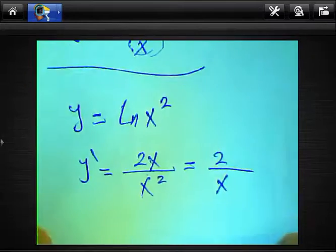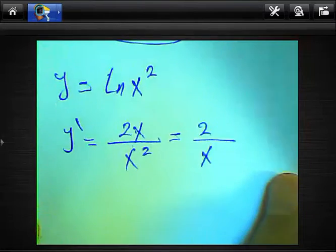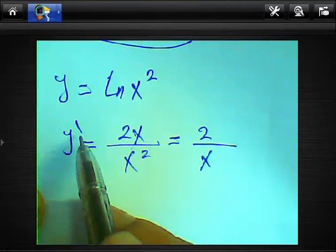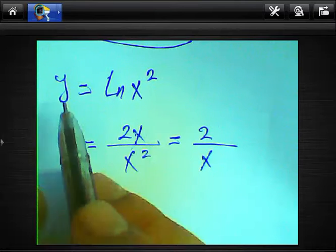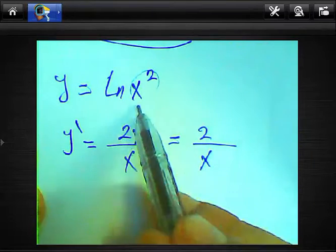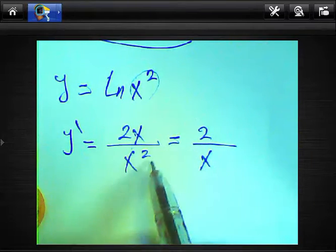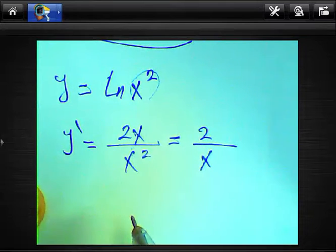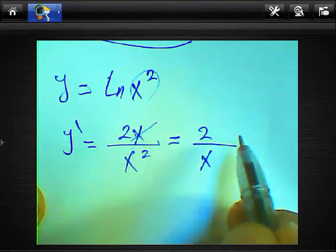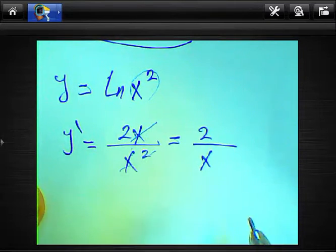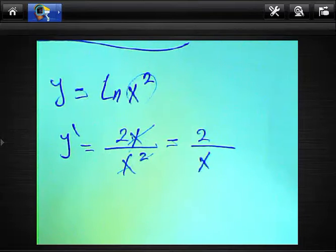For y equals ln(x²), the derivative y' — we write x² in the numerator. The derivative of x² equals 2x. We simplify: x² divided by x equals x, so the derivative of this function will be 2 over x.